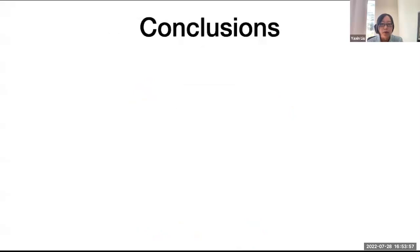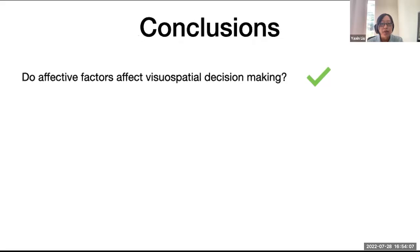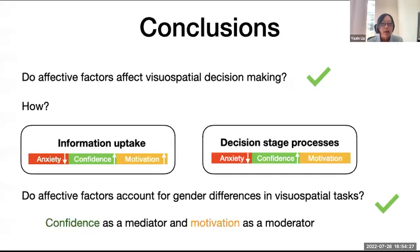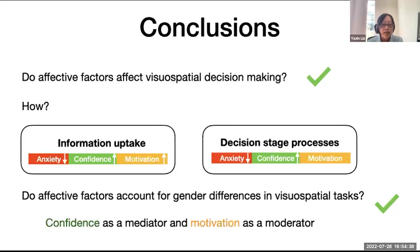To conclude, in this work we shed new light on the potential roles of affective factors in visual-spatial tests. We asked whether affective factors affect visual-spatial decision-making, and the answer is yes. We found that affective factors differentially impact information processing and decision stage processing. Finally, we found that affective factors account for gender differences in visual-spatial tests through the mediation link of confidence and the moderation link of motivation. Thank you for your attention and I'm happy to take any questions.